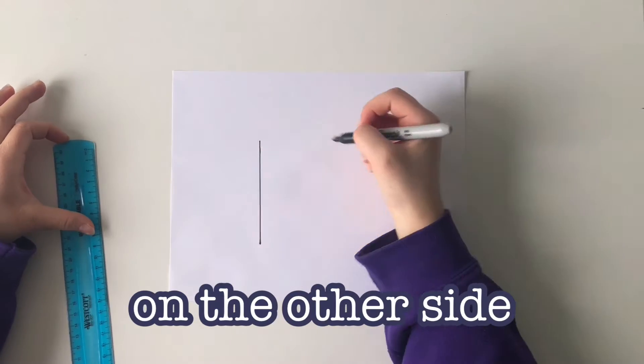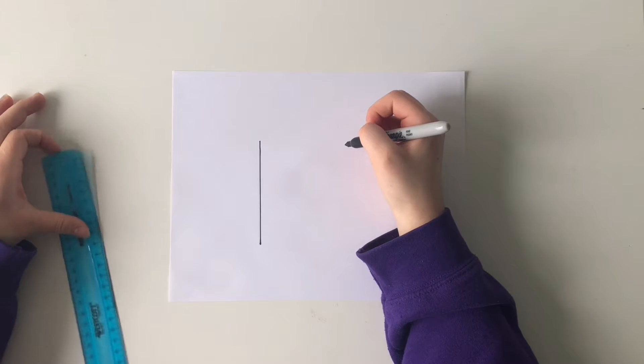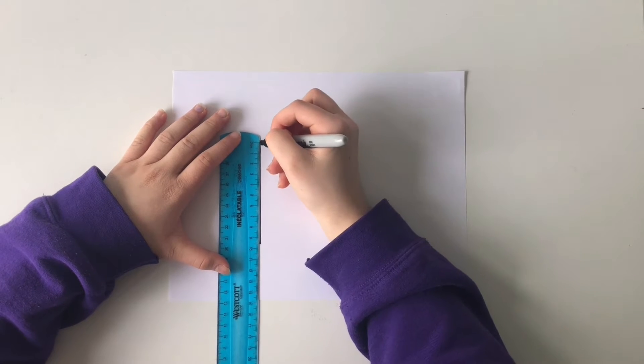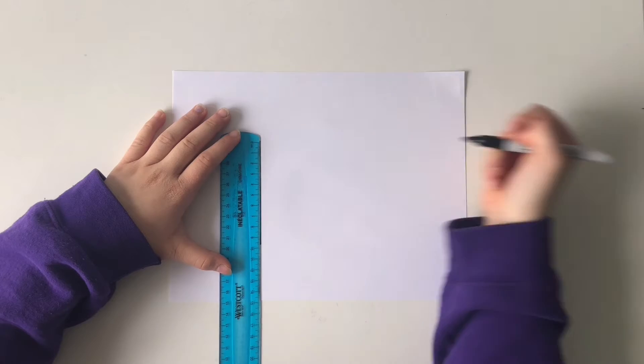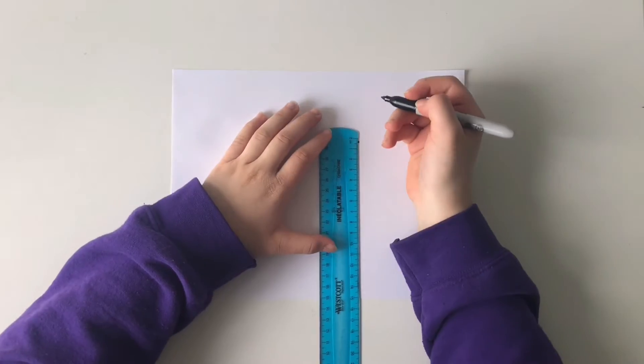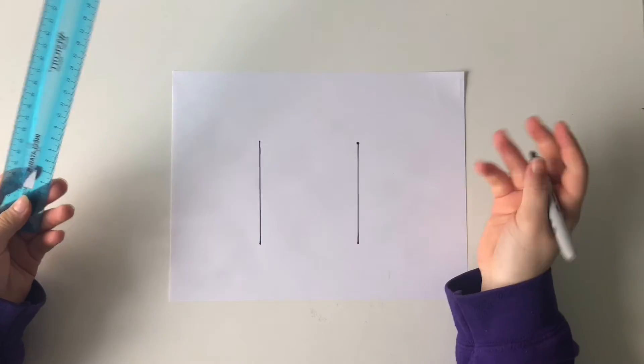Then do the exact same thing on the other side. So I would recommend measuring how long this line is. For me, it is around 9.5 cm. Then, I'm putting a dot there. Make the exact same line coming down. Now, connect the lines.